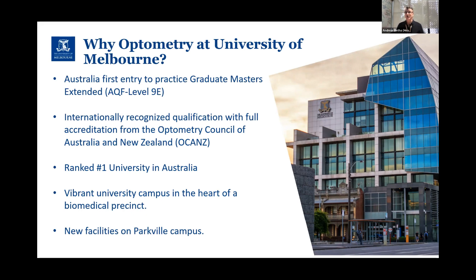I'm very biased of course, but I think the University of Melbourne is the best one of those, and I'm here to convince you that that might be the case. We were the first of the Australian courses to graduate a Doctor of Optometry. We call that an Australian Quality Framework Level 9 certification, and it's internationally recognised and fully accredited by our national accrediting body, which is the Optometry Council of Australia and New Zealand, OCANZ.